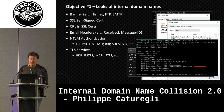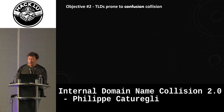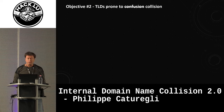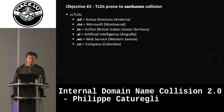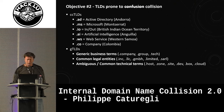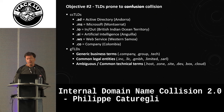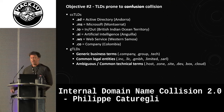Now that we had methods for getting these domains, we focused only on TLDs prone to collision — we couldn't pick all 1,200. We selected CC-TLDs likely to cause confusion: .ad for Active Directory (actually Andorra), .ms used even by Microsoft (actually Montserrat), .io, .ai, .ws, and .co. We also looked at GTLDs — mainly generic business terms like .company, .group, .tech — and common legal entities like .llc, .inc, .limited, .srl. And ambiguous technical terms like .host, .zone, .site, .dev, .box, and .cloud.